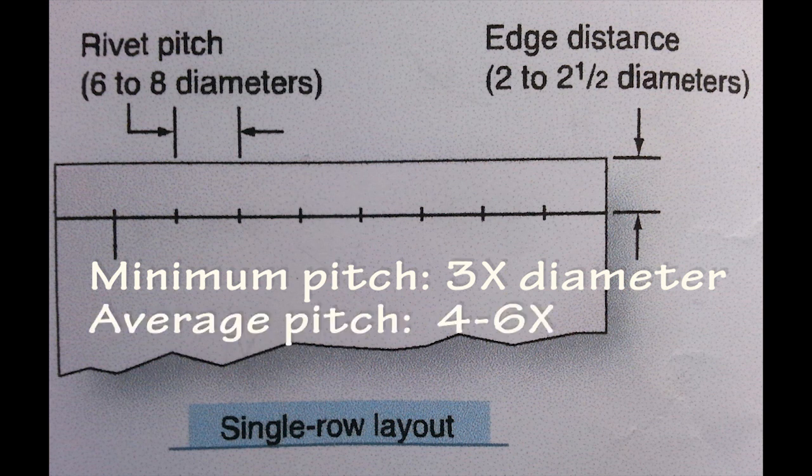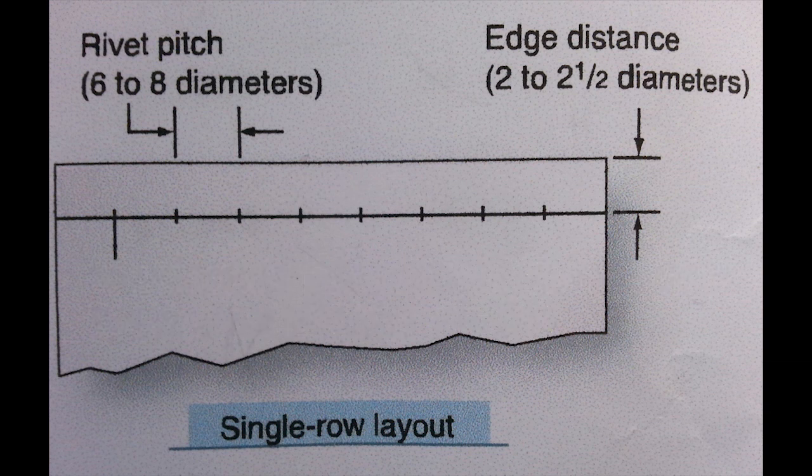The average rivet pitch usually ranges from four to six rivet diameters, although in some instances rivet pitch could be as large as 10 rivet diameters. The minimum pitch also depends on the number of rows of rivets. One- and three-row layouts have a minimum pitch of three rivet diameters, and a two-row layout has a minimum pitch of four diameters.